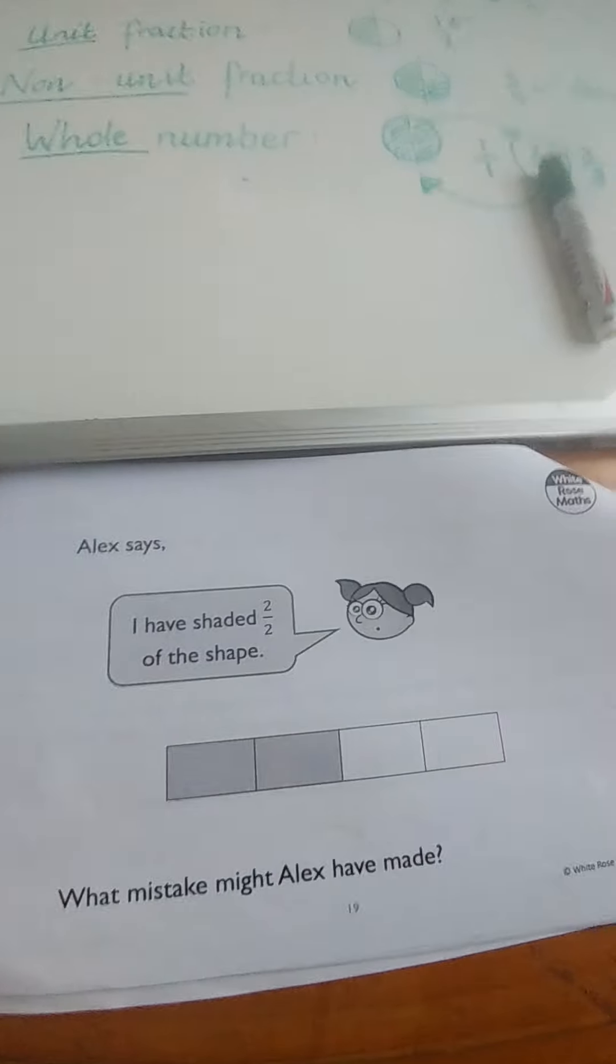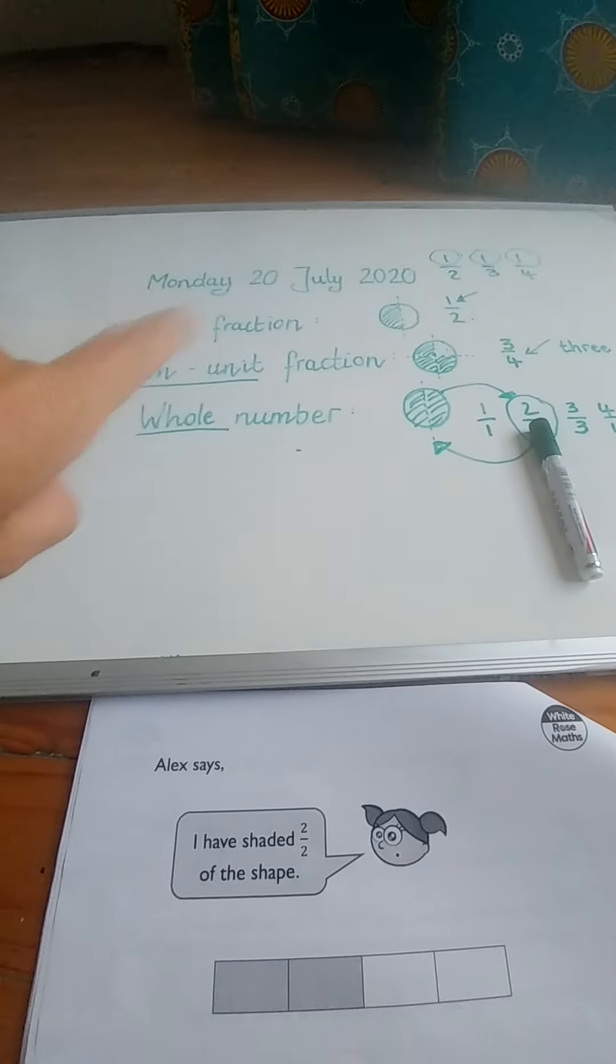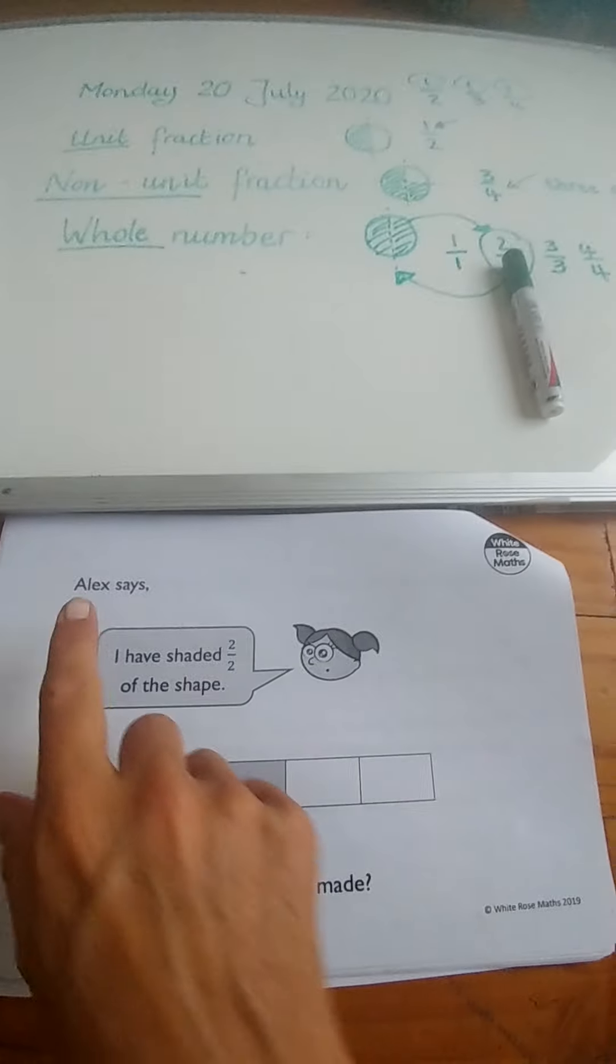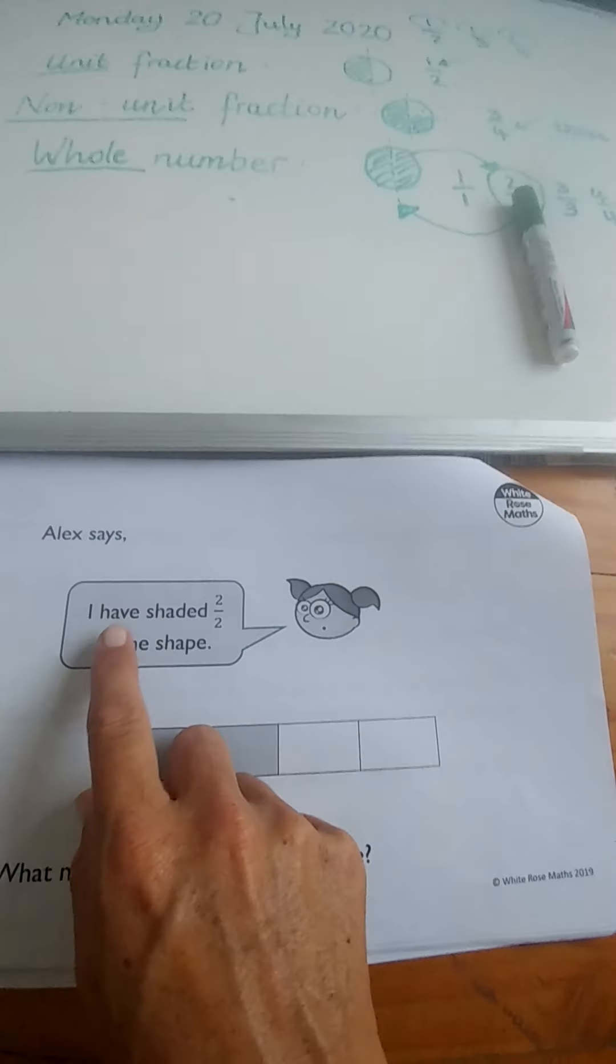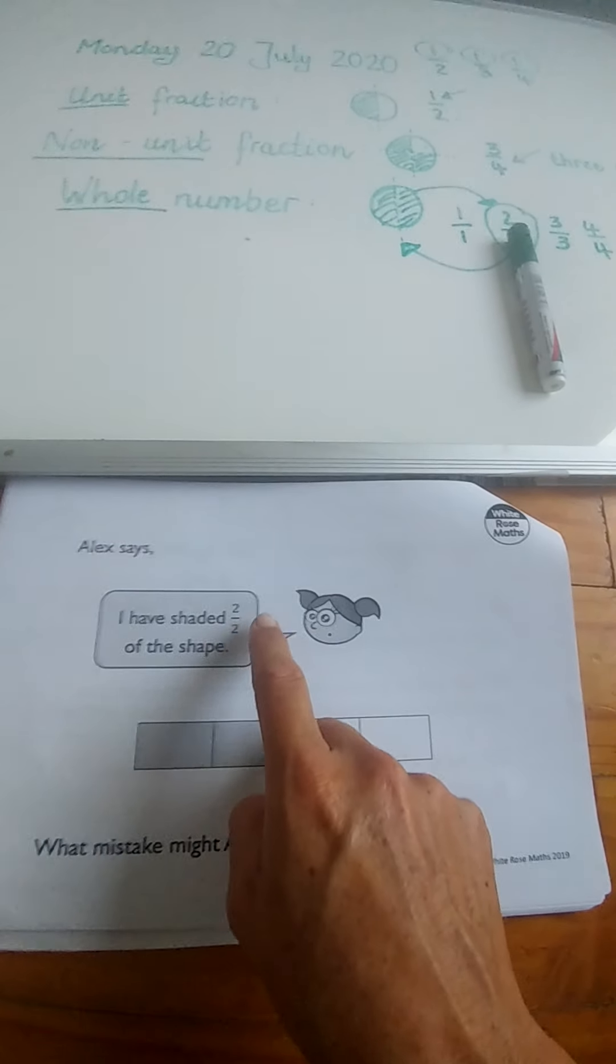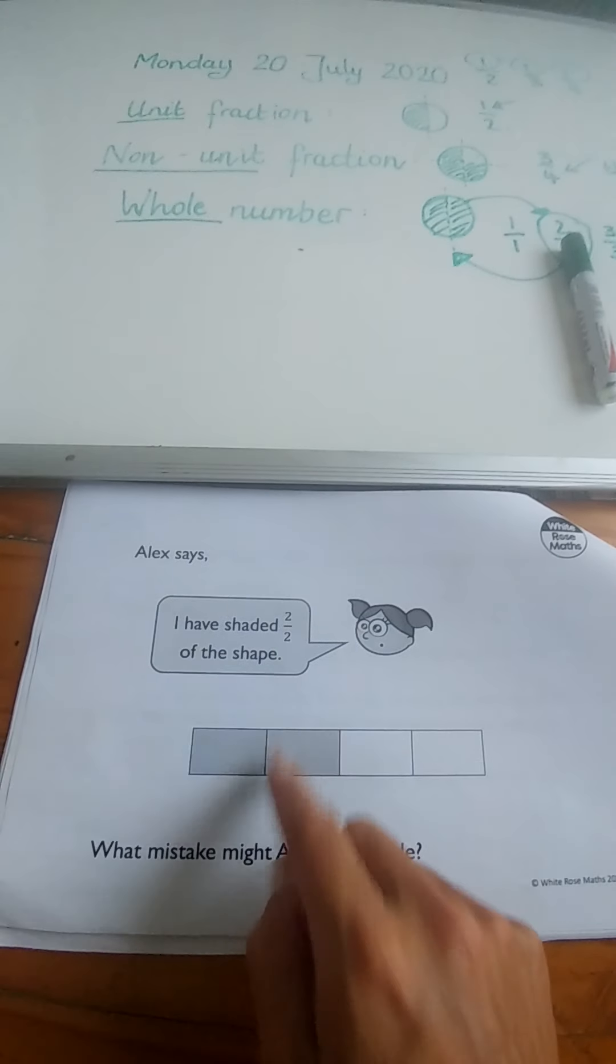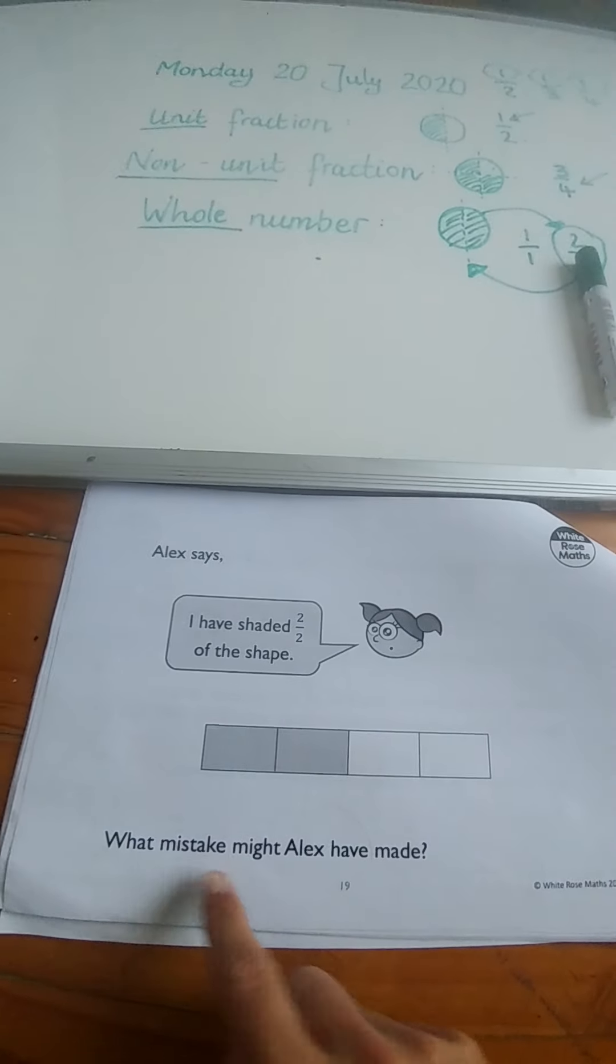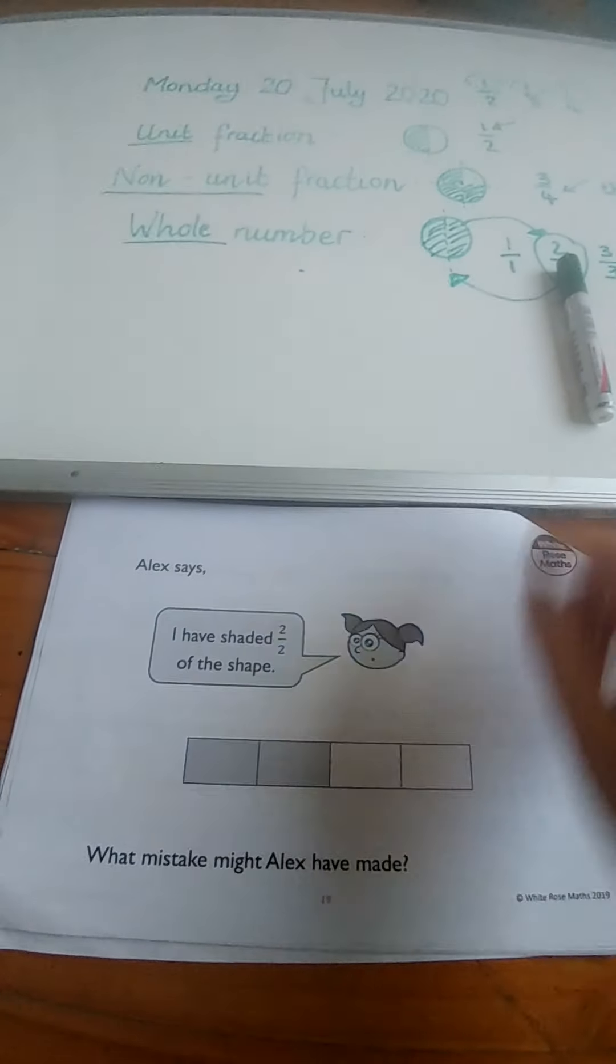So now we've jotted down in our books all of this lovely information and we're going to look at Alex. Here it says Alex says I have shaded two-twos of the shape. What mistake might Alex have made? Well...